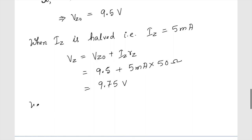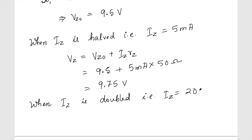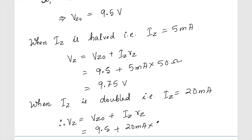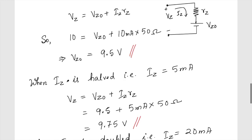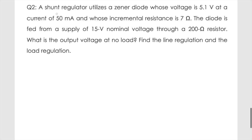When the current is doubled, iz becomes 20 milliampere. Then vz equals vz0 plus iz times rz equals 9.5 plus 20 milliampere times 50 ohms, which gives 10.5 volts. So: at double current vz is 10.5 volts, at half current vz is 9.75 volts, and vz0 is 9.5 volts. These are the answers for the first problem.